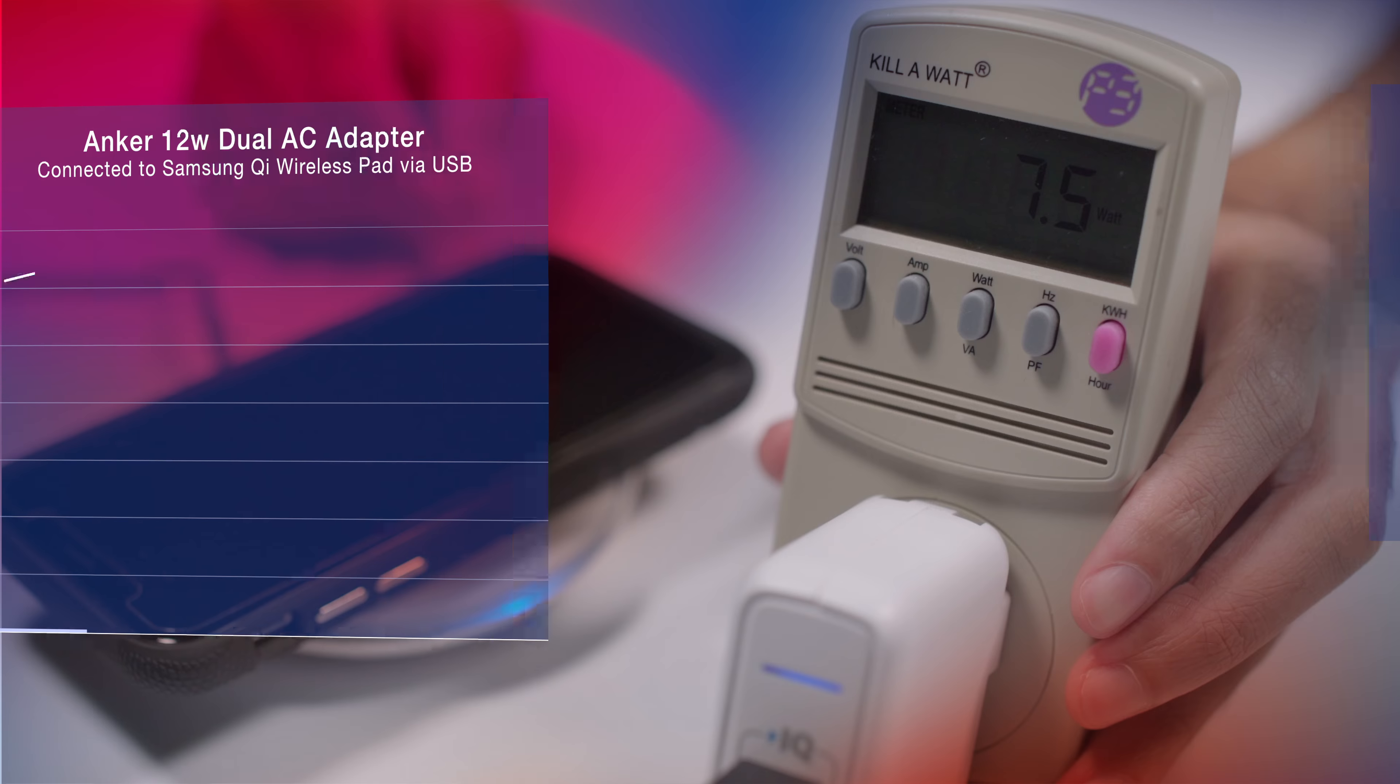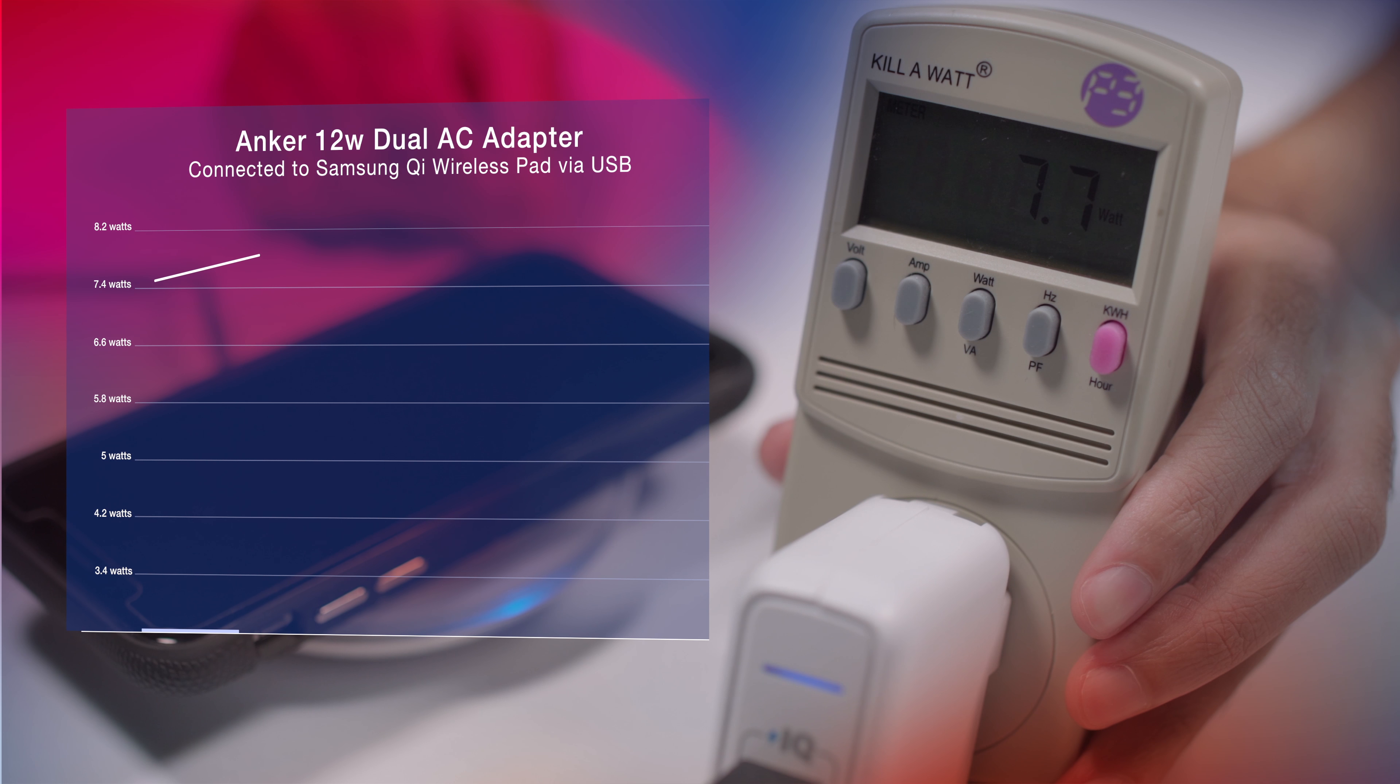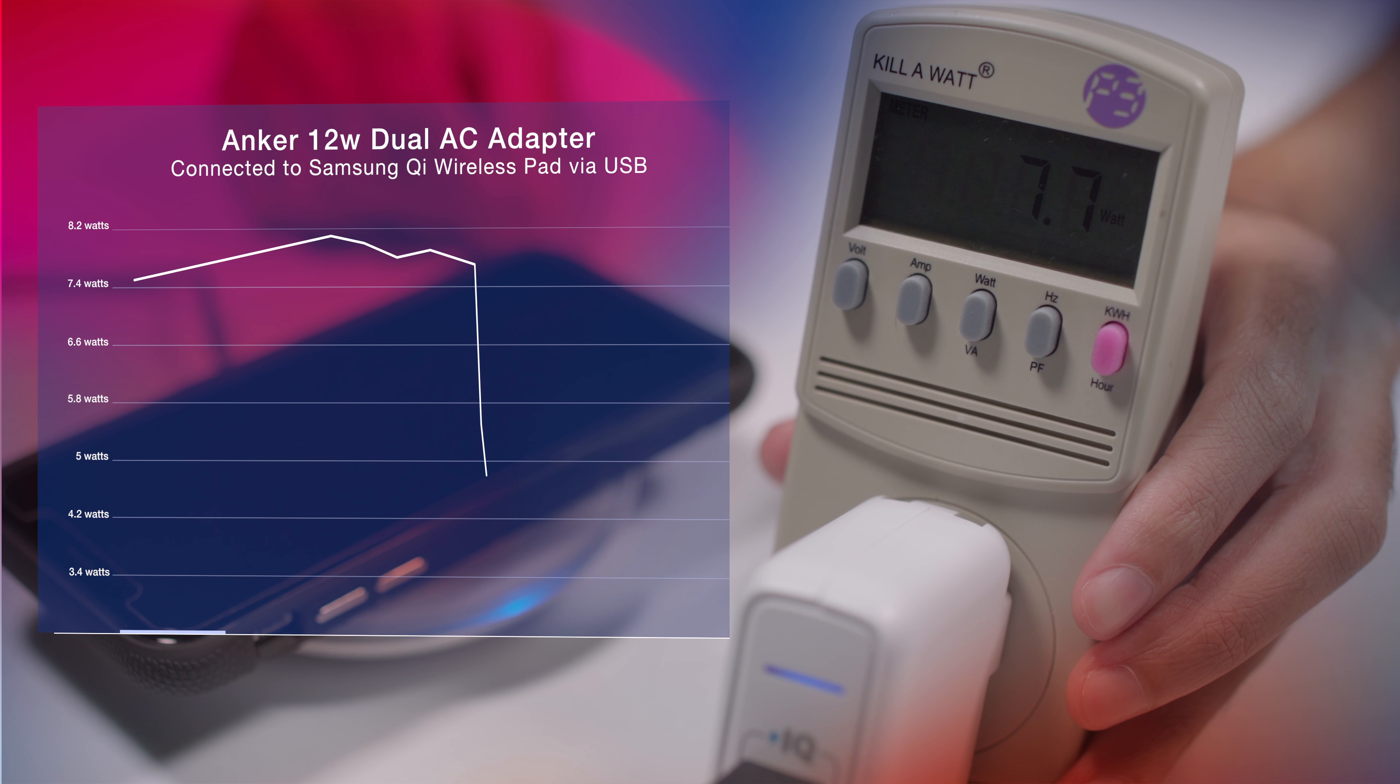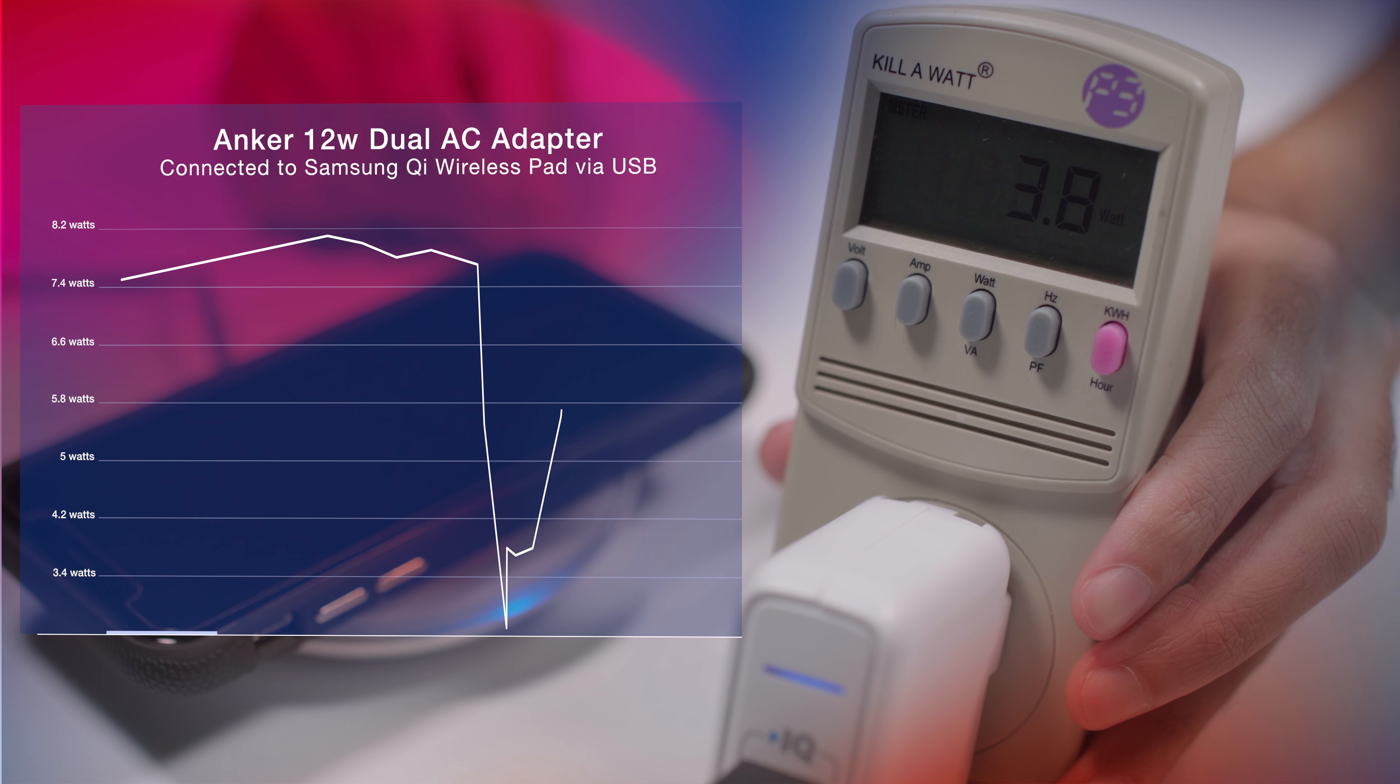While Anker is much more variable, it clocked a max 8.6 with the Samsung Qi charging pad but had a subpar average around 7.6 with quite volatile output fluctuation.